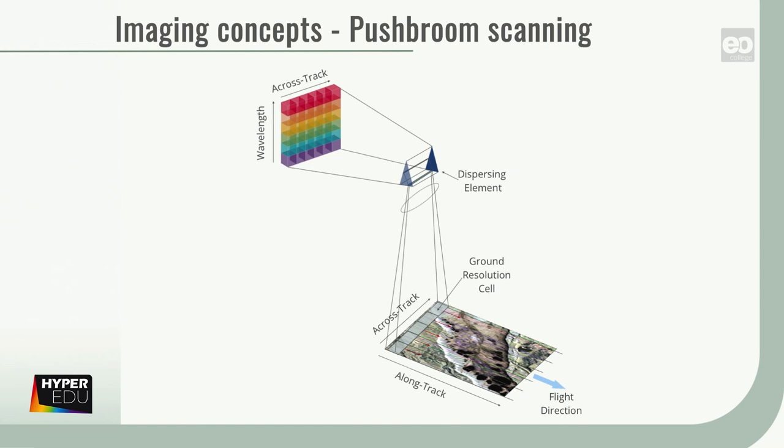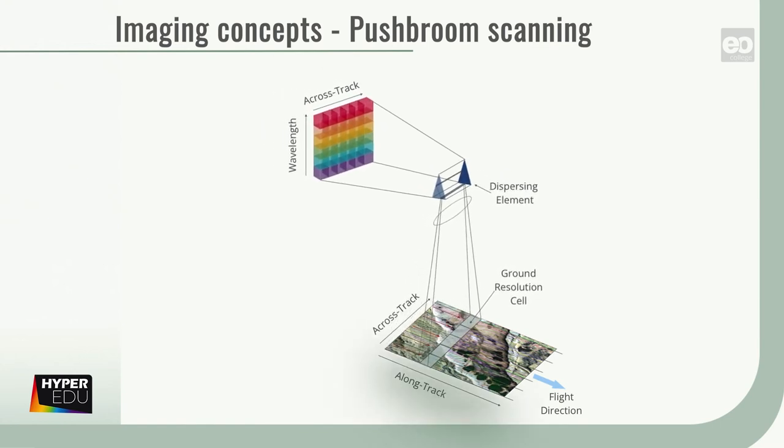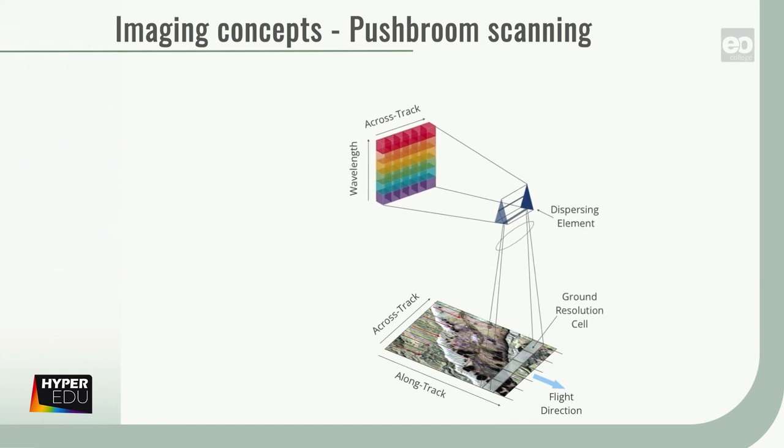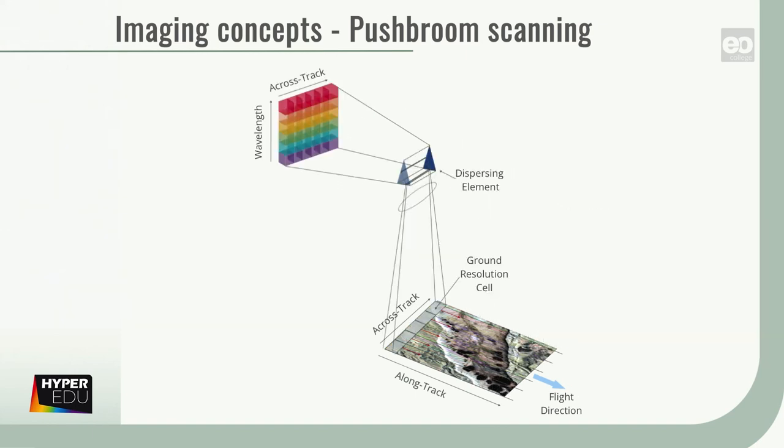In order to represent the along-track dimension, the sensor platform moves along-track and performs these single-line measurements at a frequency that covers the surface line-by-line, ideally without gaps.